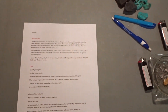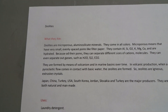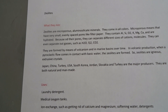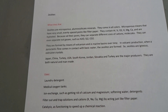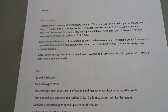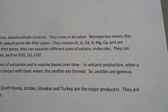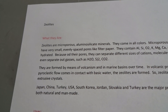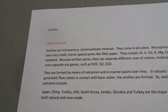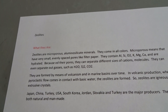This is what I want to show you. Zeolites are microporous aluminosilicate minerals. They come in all colors. Microporous means that they have very small, evenly spaced pores like filter paper. They contain aluminum, silicon, oxygen, potassium, magnesium, calcium, and they are hydrated minerals. They actually boil water out of these things, and that's one of the reasons why they have important industrial uses. Because of their pores, they can separate different sizes of cations and molecules.